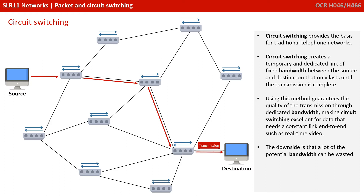Using this method guarantees the quality of the transmission through dedicated bandwidth, making circuit switching excellent for data that needs a constant link end-to-end, such as real-time video. The downside, though, is that a lot of the potential bandwidth can be wasted.